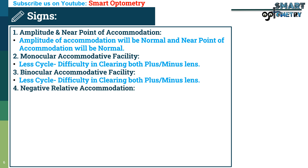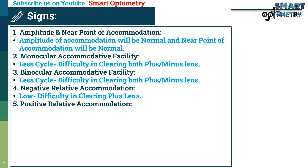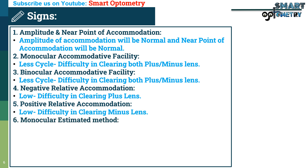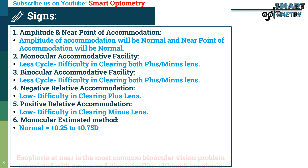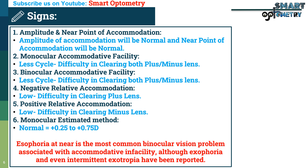Negative Relative Accommodation will be low due to difficulty clearing plus lenses. Positive Relative Accommodation will also be low due to difficulty with minus lenses. Monocular Estimated Method will be normal, at plus 0.25 to plus 0.75 diopters. Remember, tests that require relaxation or stimulation of accommodation will be reduced in accommodative infacility, such as accommodative facility and relative accommodation. Isophoria at near is the most common binocular vision problem associated with accommodative infacility, although exophoria and even intermittent exophoria have been reported.